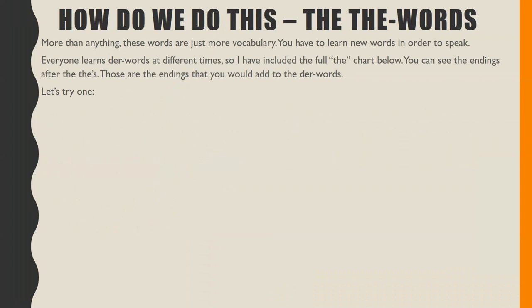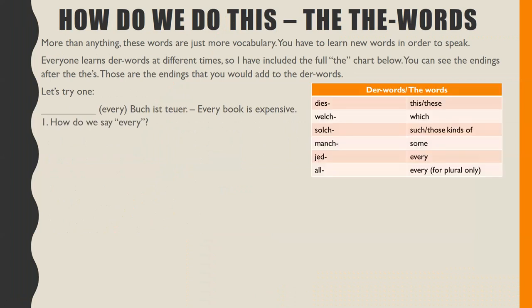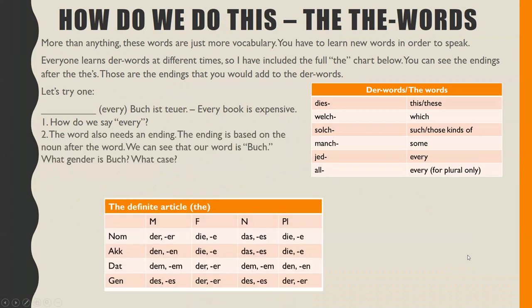Let's try an example. 'Every Buch ist teuer' — every book is expensive. How do we say 'every'? Looking at our chart, 'every' is either 'jede' or 'all' depending on whether or not the noun is plural. The word also needs an ending, and the ending is based on the noun after the word. Our noun is 'Buch.'